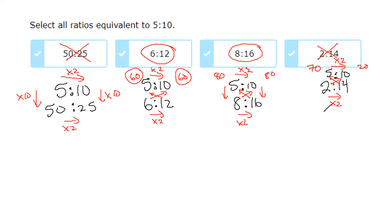To summarize: you have three ways to check equivalence. Always line the ratios up first. Then check left to right, or up and down — if you get the same factor in both directions, they're equivalent. If you're unsure, cross multiply — if you get the same answer, they're equivalent. That's all you have to do.